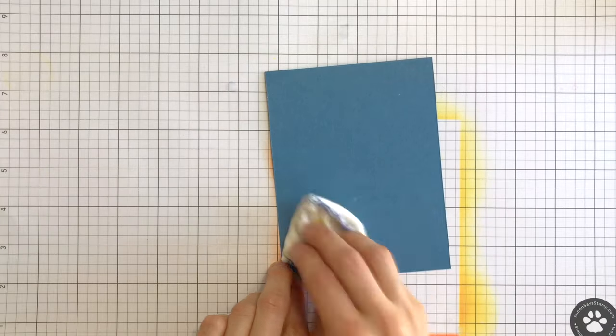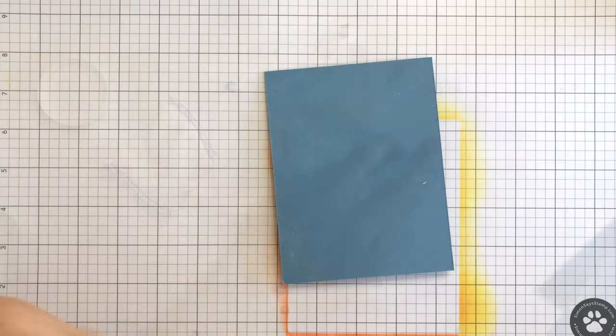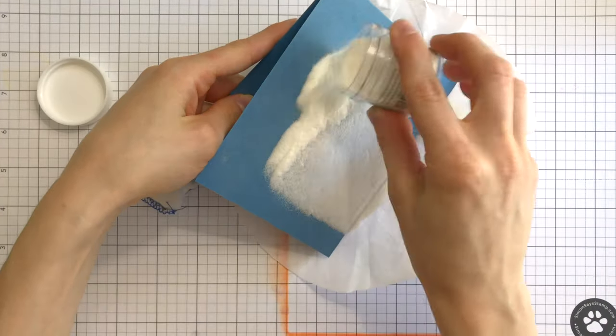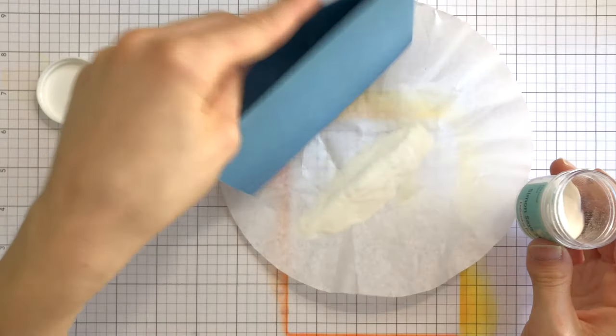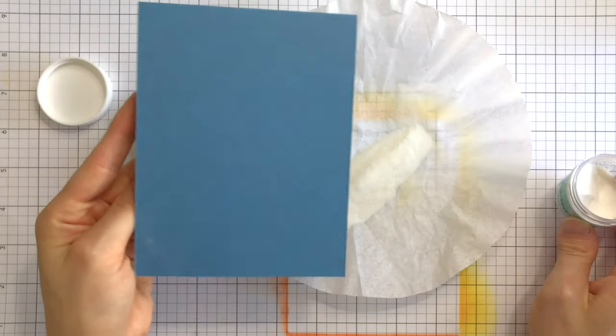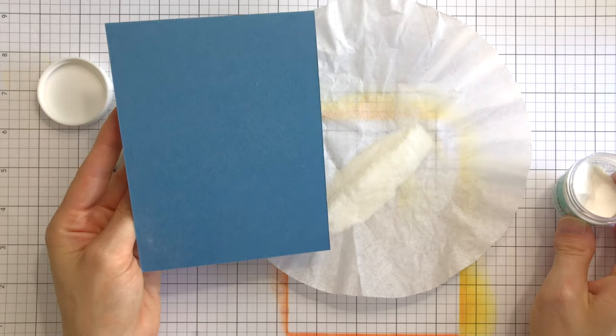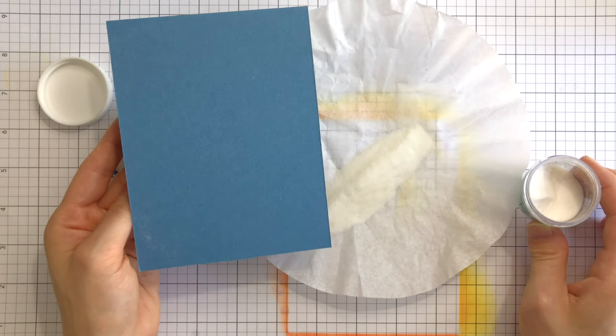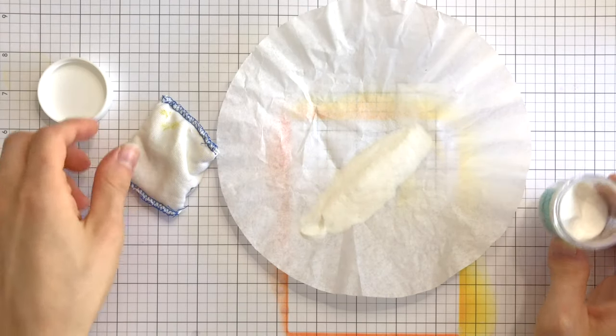To use the tool, simply tap it onto your paper to release some of the powder, and then brush it across the area you intend to stamp. This effectively neutralizes any moisture or oil on the paper's surface, ensuring your embossing powder sticks only to the embossing ink areas.